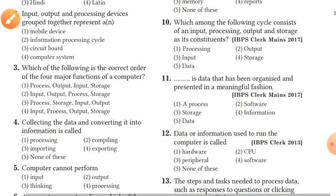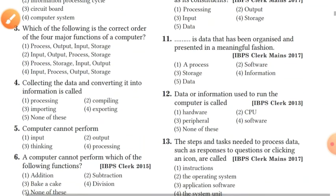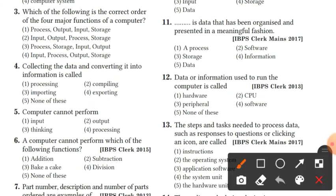Question 3: which of the following is the correct order of the 4 major functions of a computer? The options include: processing, output, input, storage; and input, output, processing, storage.